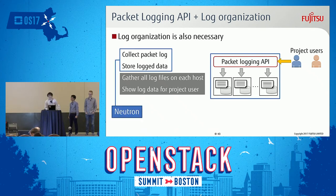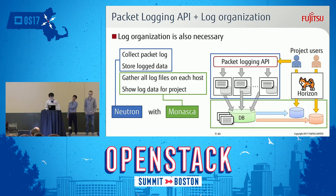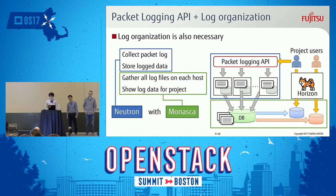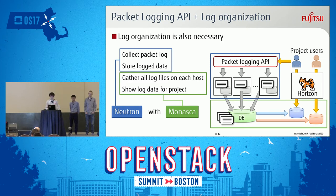Neutron's packet logging API can solve collecting packet logs and storing log data. Since log data are stored in host servers, project users or tenant users cannot access log data. We also need a means to provide that data to users. Many methodologies exist, but one example is collaborating with Monasca.